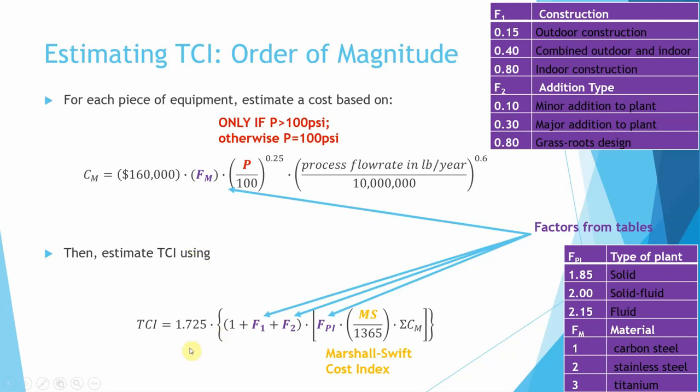To estimate the total capital investment for your entire operation, you're going to use this: 1 plus F1 plus F2, which again are dependent on your operation nature. FPI comes from a table depending on the type of plant you're doing. You multiply that by the Marshall Swift cost index and divide it by 1365. It's pretty simple, looks complicated, but it's just plug-and-chug.